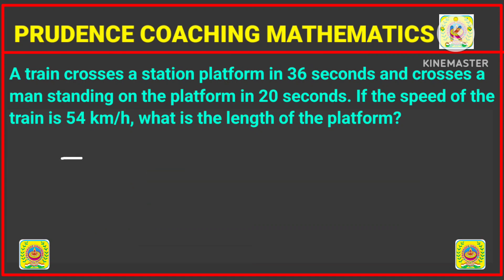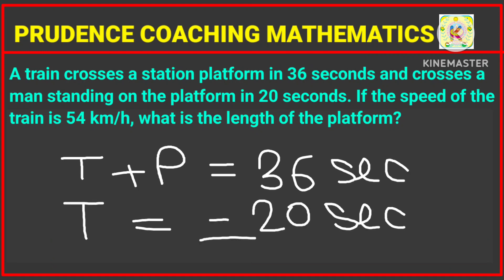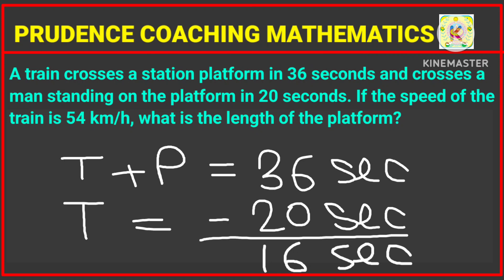In the first case it is taking 36 seconds whereas in the second it is taking 20 seconds. That means the extra 36 minus 20 equals 16 seconds is the time it is taking because it has to cross the length of the platform. So the train crosses the platform length in 16 seconds.